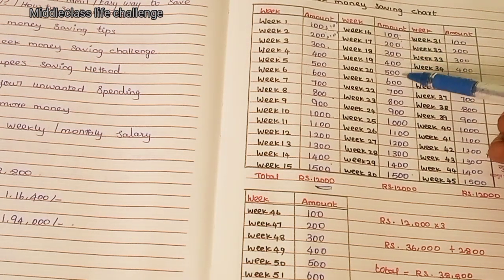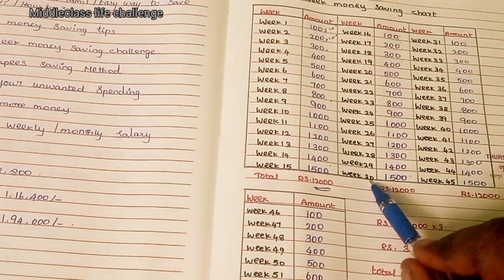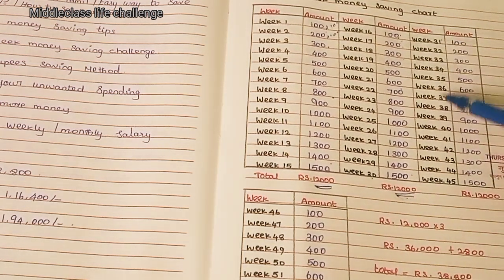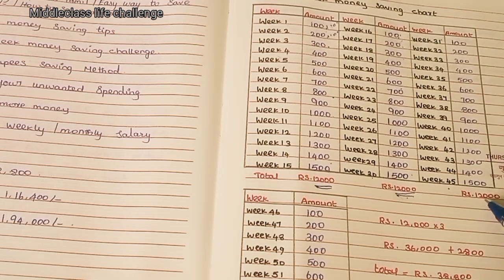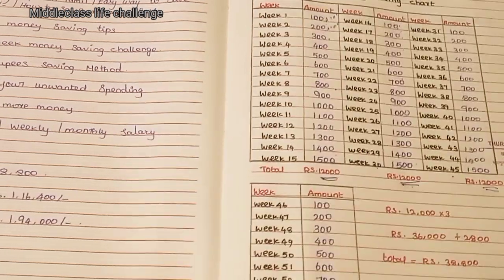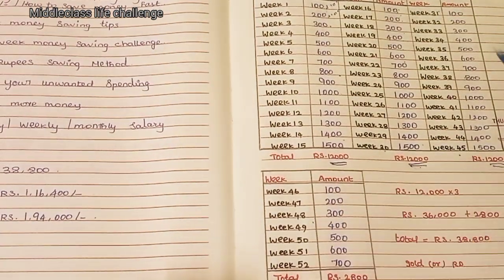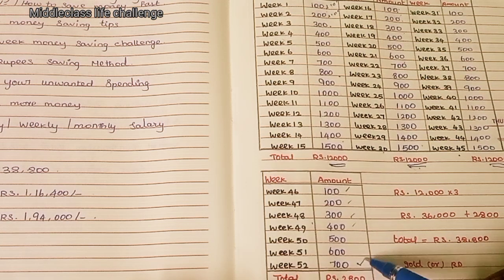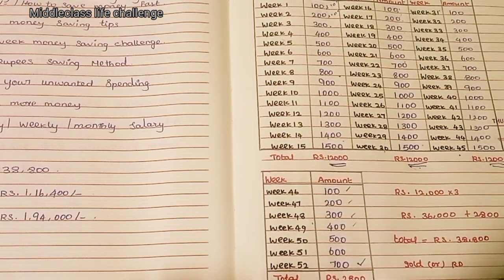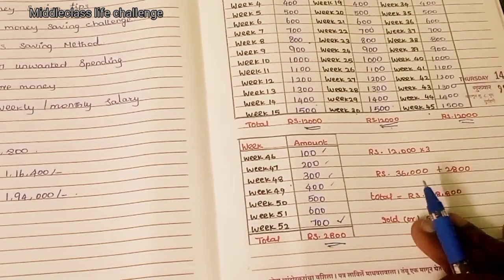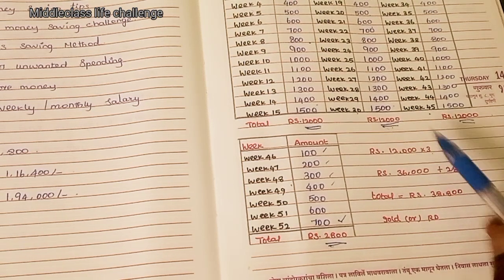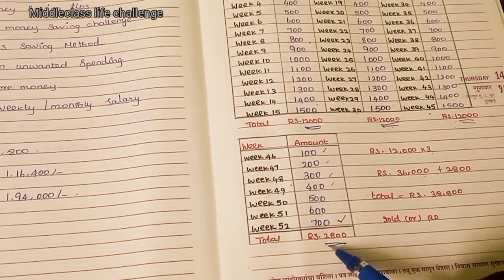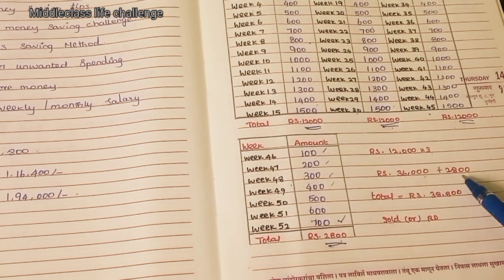100, 200, 300, 400, 500. So this method will go to 30 weeks. It will be 12,000. So it will be 31,000, so it is 45. So it is 15 weeks and it is 12,000. So it is 7 weeks extra. 100, 200, 300, 400 — so it is 700. Then 100, 200, 300, 400. So it is 12,000 into 3. You get 36,000 plus 2,800. So if you add this amount, you can save it in one year.